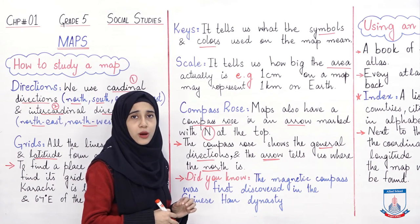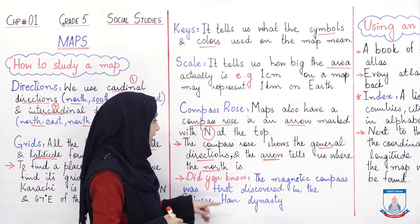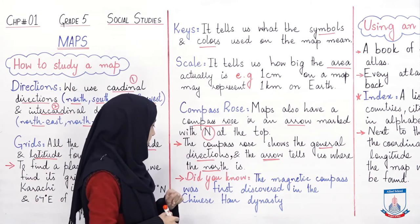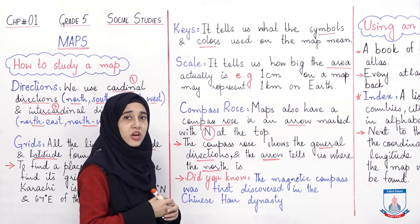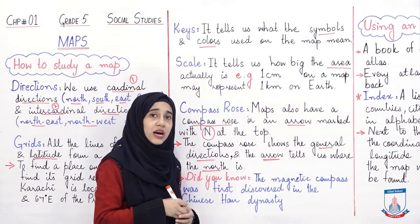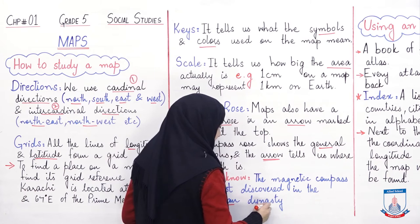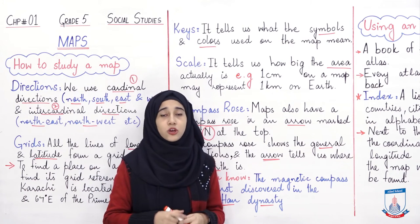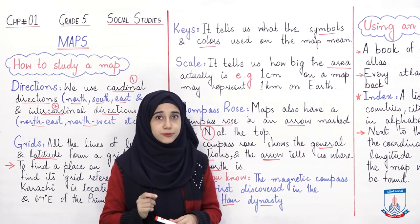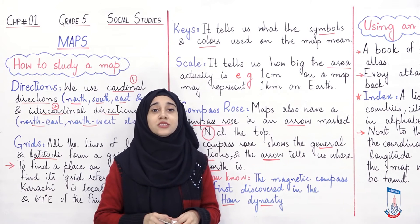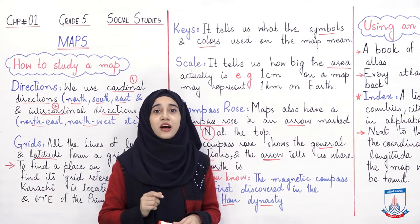Ab aapki book mein ek box bana hua hai jis mein likha hua hai 'Did you know?' — that is extra information. The magnetic compass was first discovered in the Chinese Han dynasty. Magnetic compass, joki aap directions janne ke liye use kerte ho, woh sabse pahle Chinese Han dynasty mein discover hua tha. Aur yeh bhi ek core information hai — jo log maps banaate hai, jo maps produce kertethe hai, unko hum kehtethe hai cartographer — C-A-R-T-O-G-R-A-P-H-E-R. They are called cartographers.